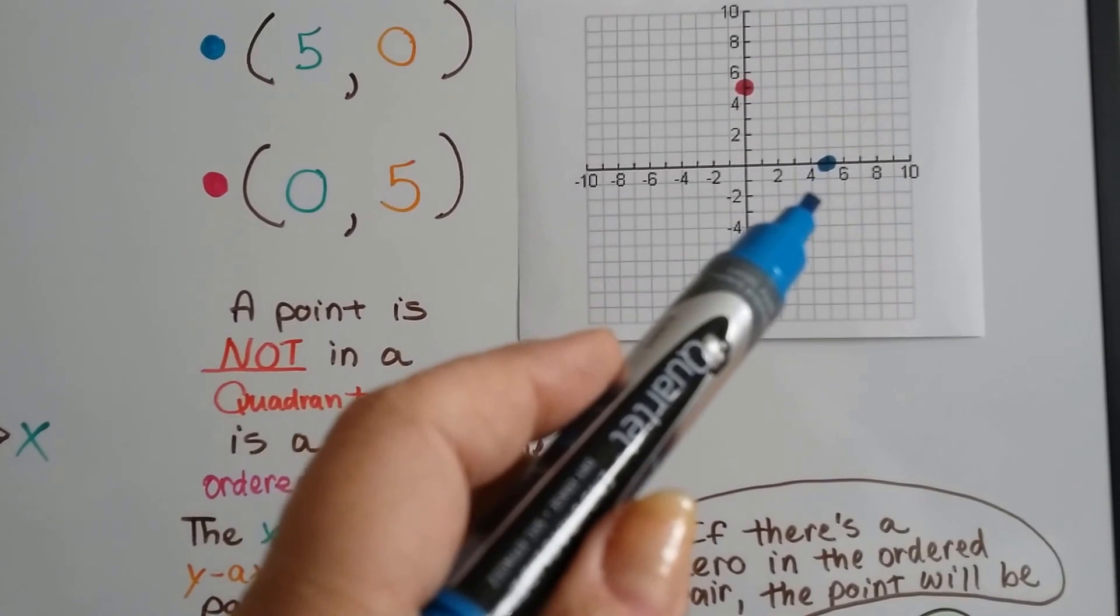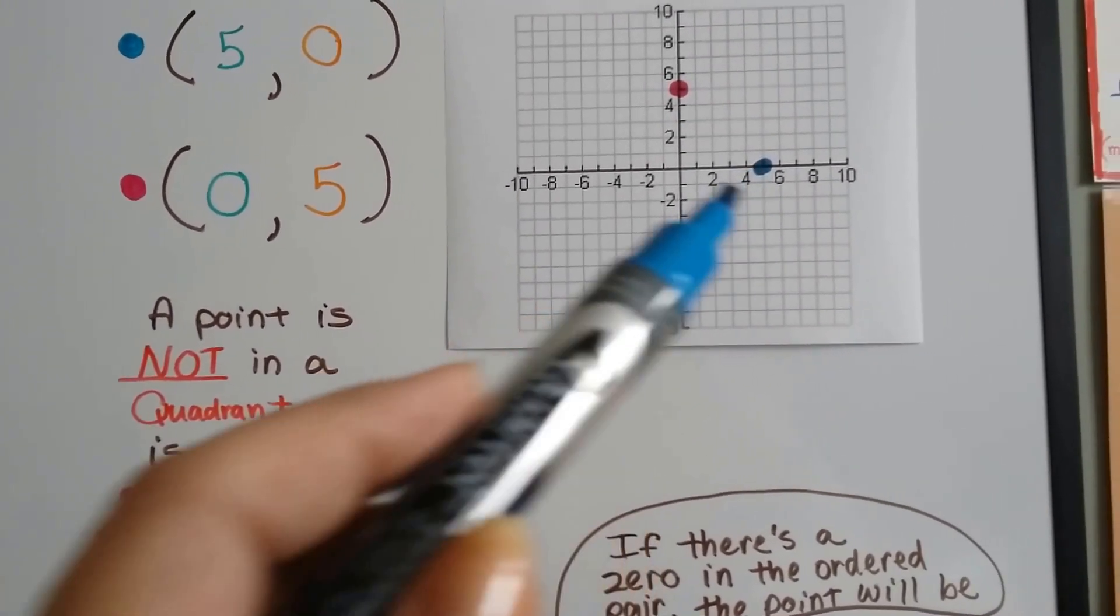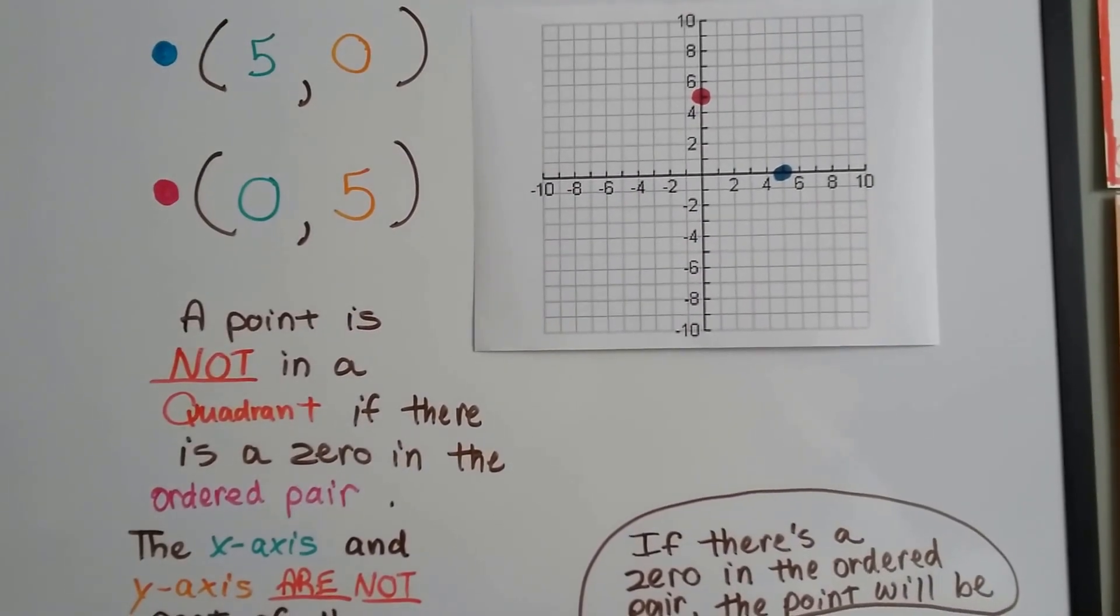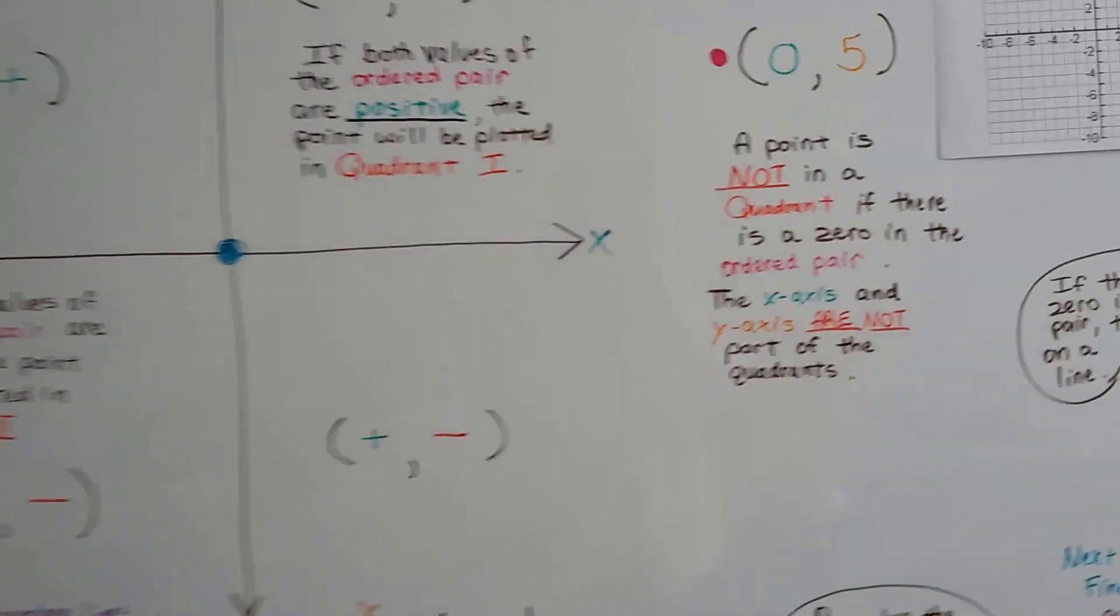Like when we were given a five and a zero, we plotted it on the coordinate plane. Now we're going to do the reverse. Now we're going to see where the coordinates are and we need to write the x and y values for them. Okay? So it's going to be the reverse of plotting points. Alright? We're going to do that in 7.1d.